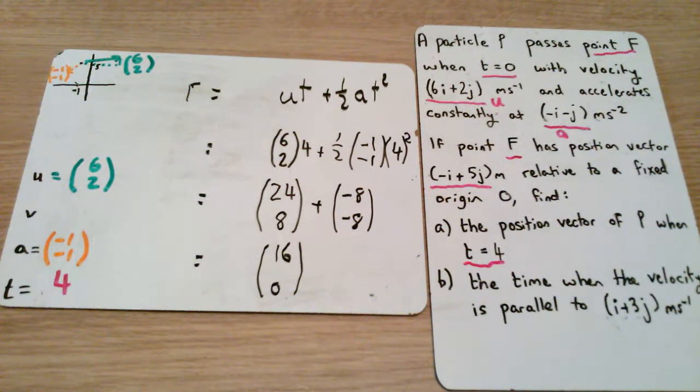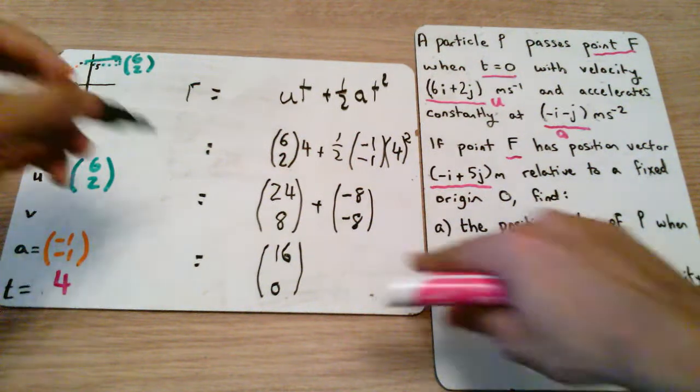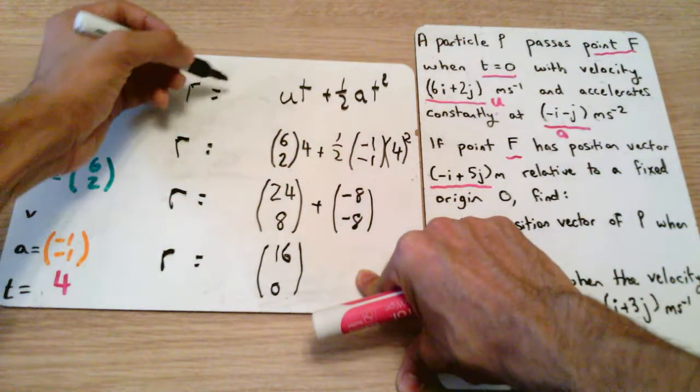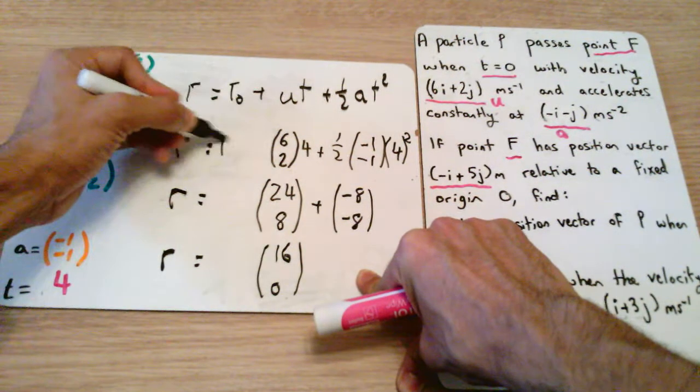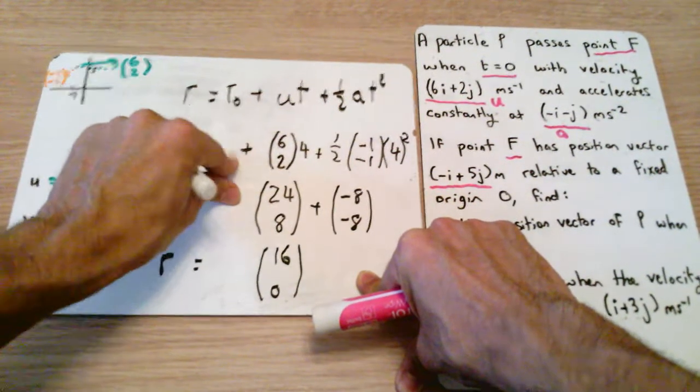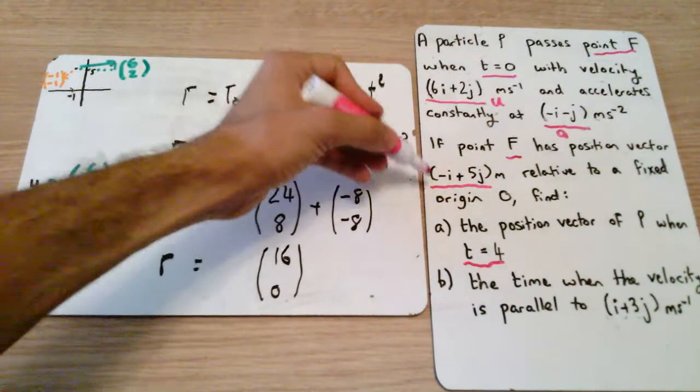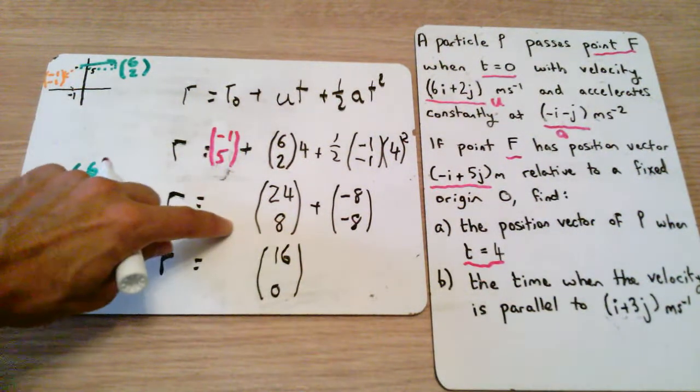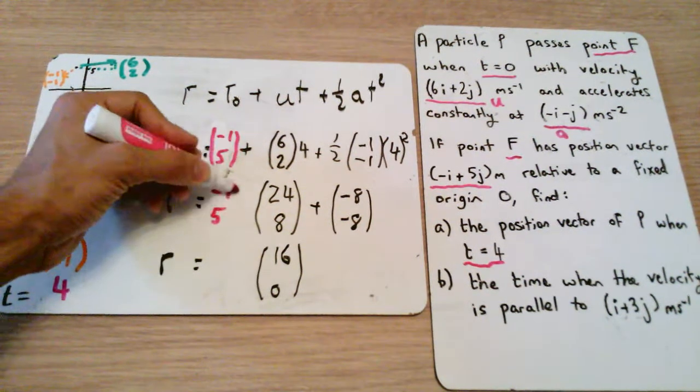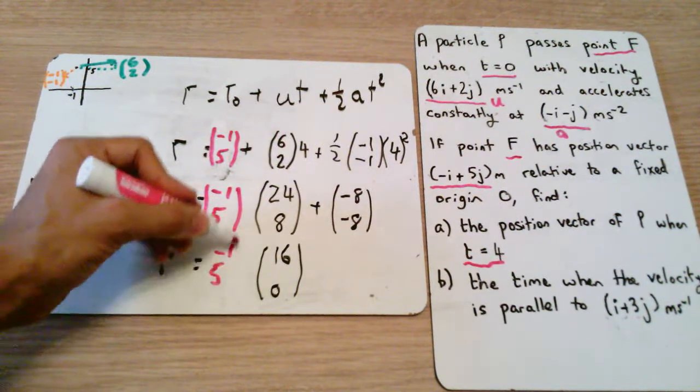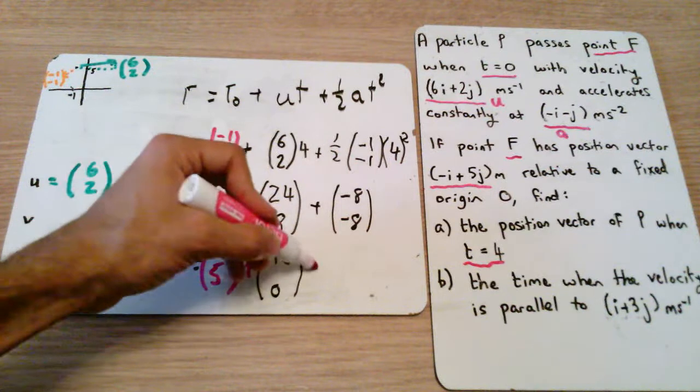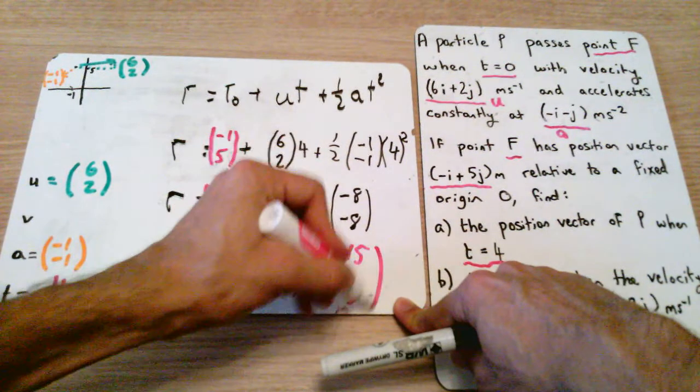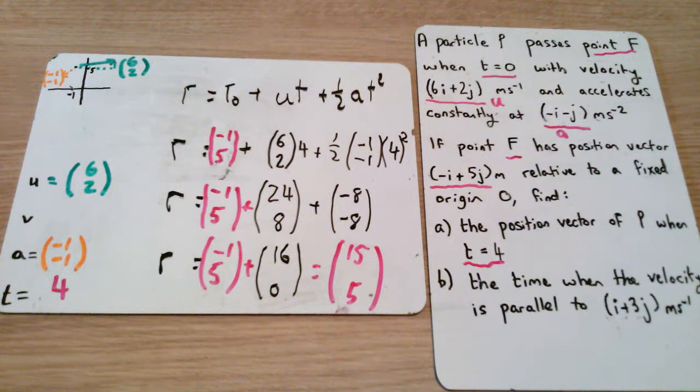And now you will notice that I've left a blank in every single line over here. And what this is, is a combination of those two formulas which we first started with. R is our position vector. But the position vector of your location in space at the end depends on your initial position. The initial position in this question was minus 1 and 5. So for this, I've had to add on minus 1, 5 at each point. And that would have given us a value overall equal to 15, 5.